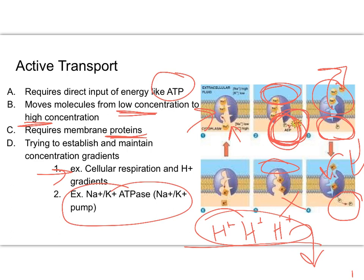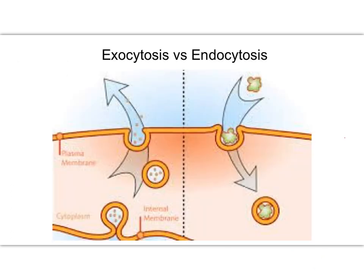So to summarize: active transport requires energy and membrane proteins. Diffusion requires no energy. Facilitated diffusion requires proteins but no energy. Both endocytosis and exocytosis are examples of active transport, so they require ATP.